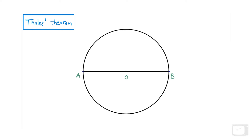So what we've got here is a circle with a diameter AB, and Thales theorem says that if we inscribe a triangle in this way, putting the other point on the circle somewhere, then we're always going to get a right angle.